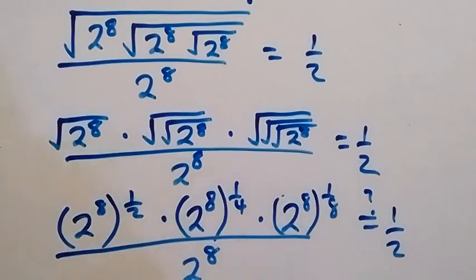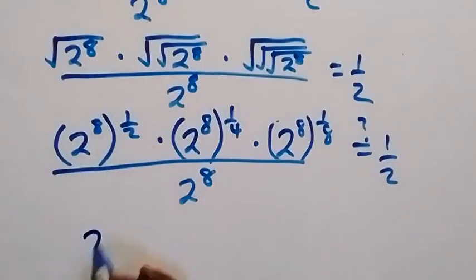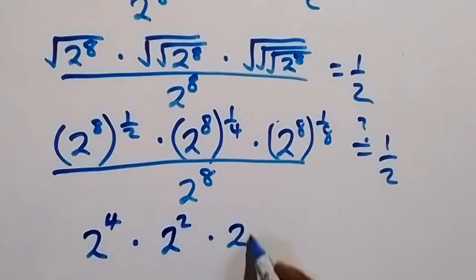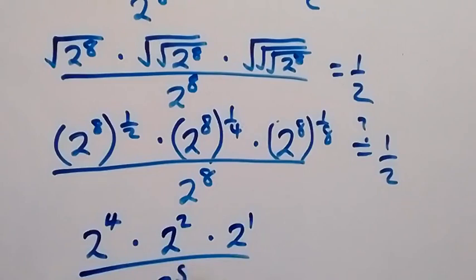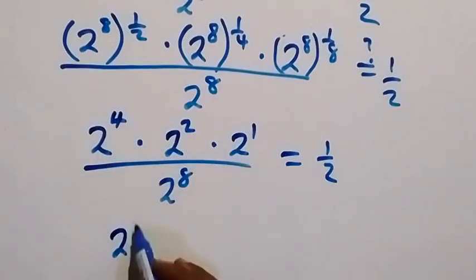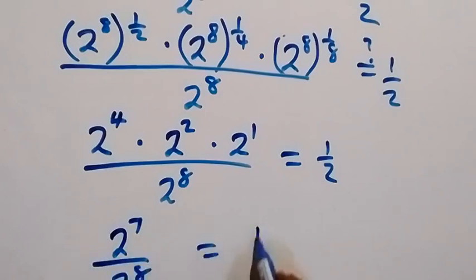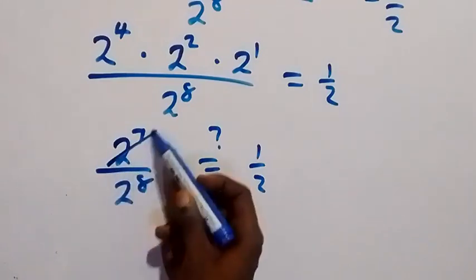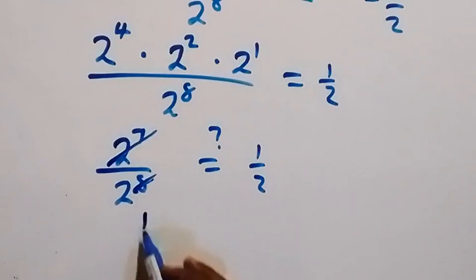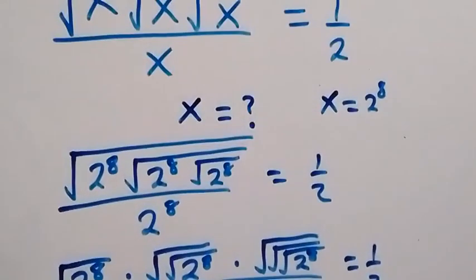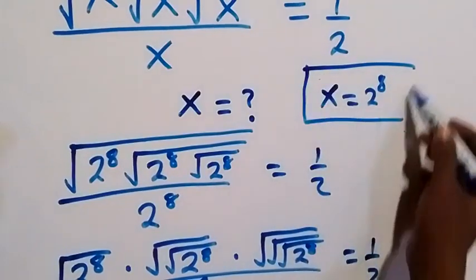Multiplying the powers: two raised to power 8 with the square root gives 2 raised to power 4, then times 2 raised to power 2, then times 2 raised to power 1, all divided by 2 raised to power 8. Bringing the powers together using the law of indices gives 2 raised to power 7, divided by 2 raised to power 8. This simplifies to 1 over 2. So the left-hand side equals the right-hand side, confirming x equals 2 raised to power 8, which is 256.